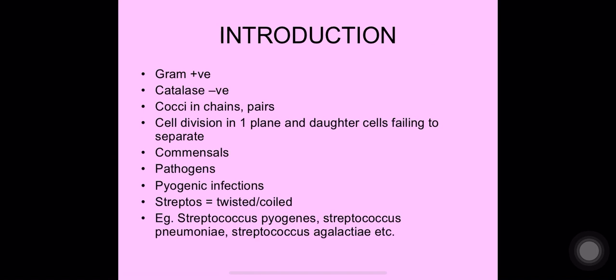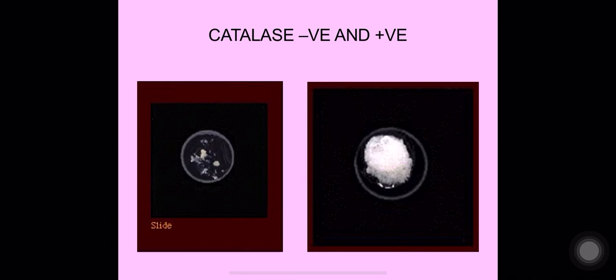In streptococci, cell division occurs in one plane and the daughter cells remain together. Many streptococci occur as commensals in the human body, but several also act as pathogens — they cause pyogenic infections. 'Strepto' also means twisted or coiled. Examples of species include Streptococcus pyogenes, Streptococcus pneumoniae, Streptococcus agalactiae, etc.